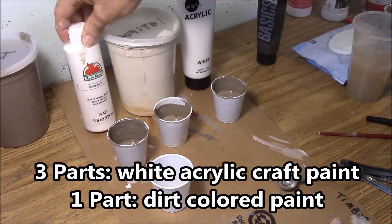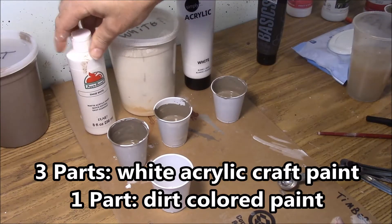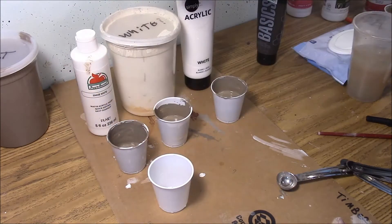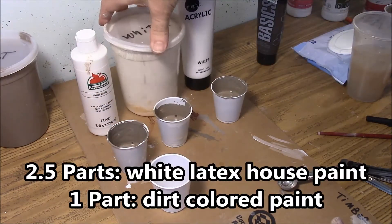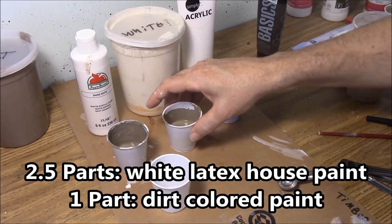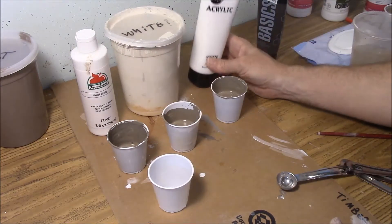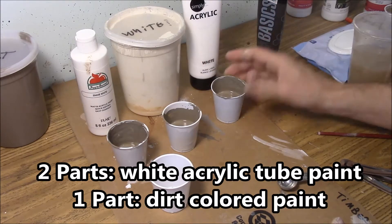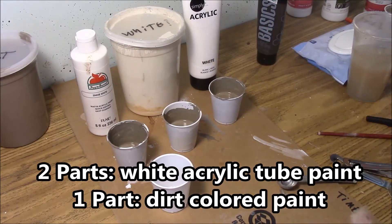For the cheap craft paint, I'm going to add three parts of white paint to one part of the dirt color. For house paint, I'm going to add two and a half parts of white paint to the dirt color. And if you're using the acrylic artist tube paint, I'm only going to add two parts of white to this dirt color to get the right color that we need.